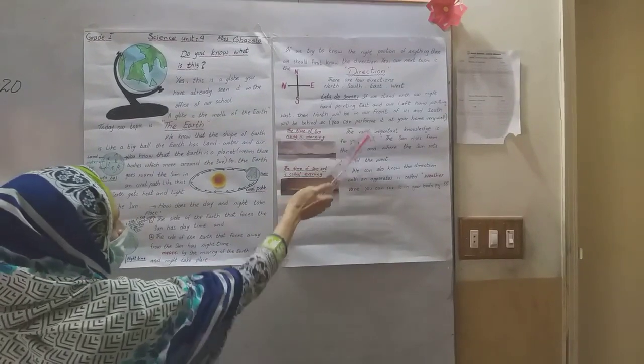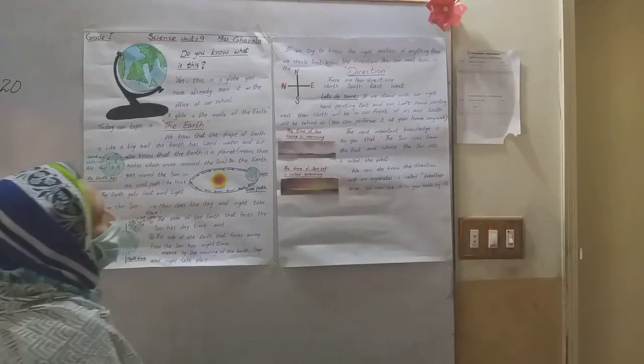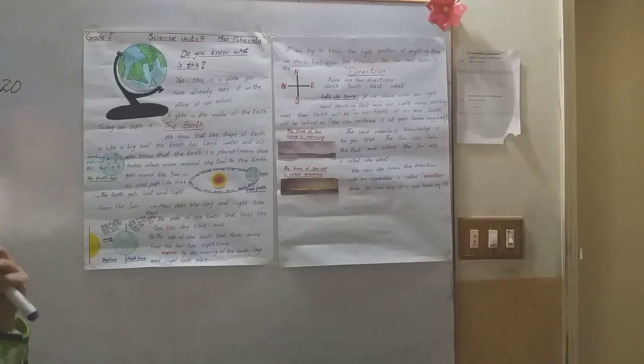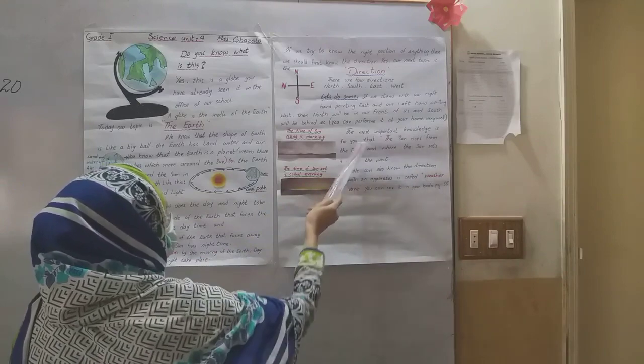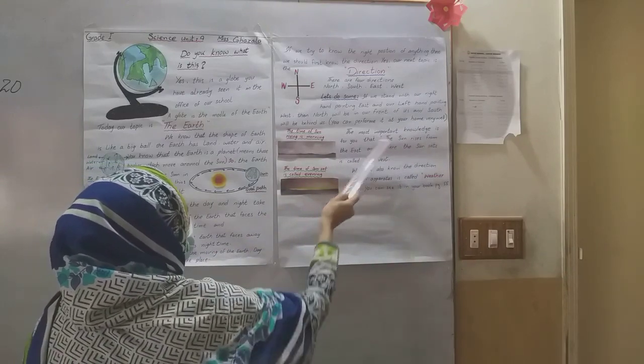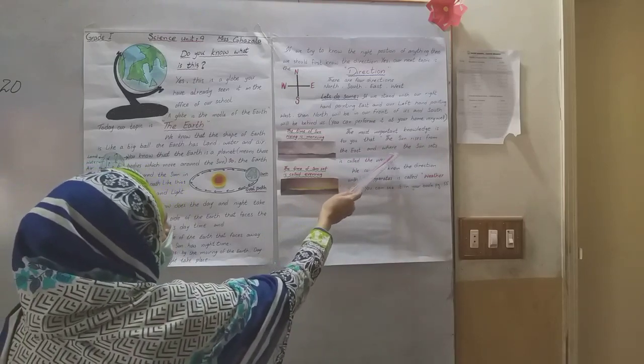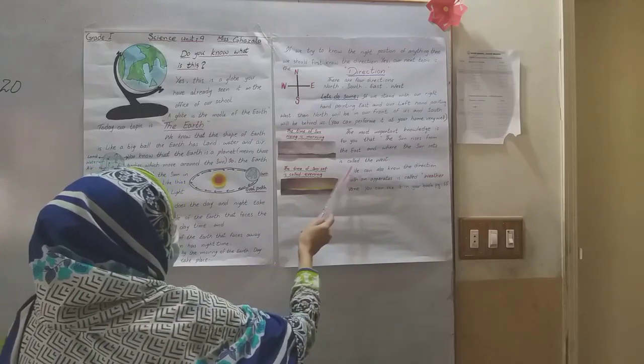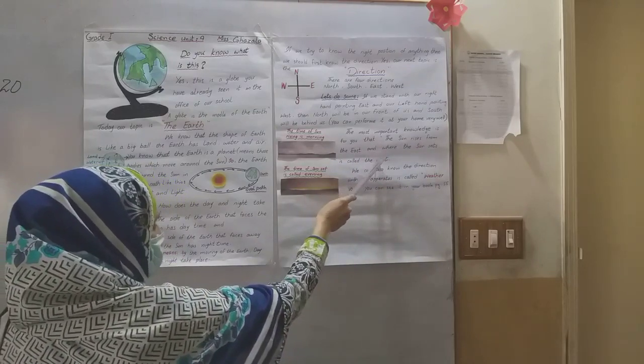You can perform it at your home very well. The most important knowledge is for you that the sun rises from the east, and from where the sun sets is called west. This is the direction of sun.